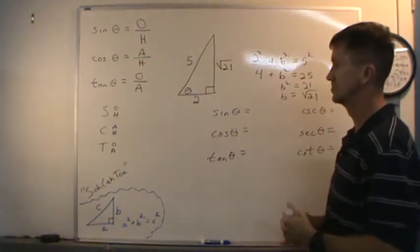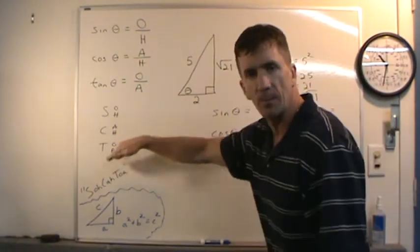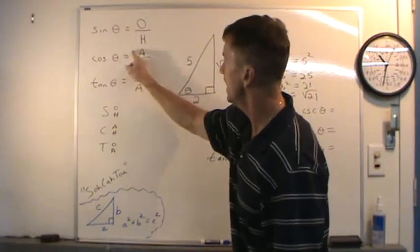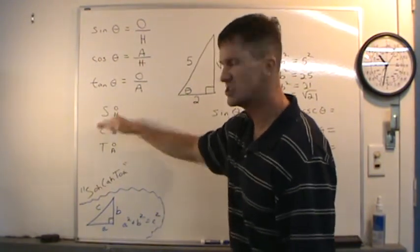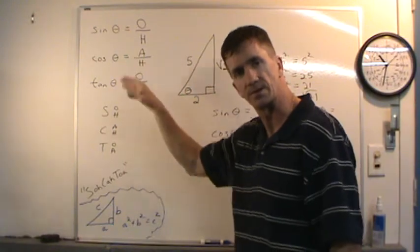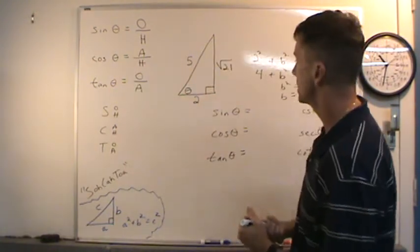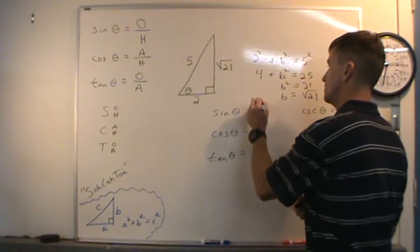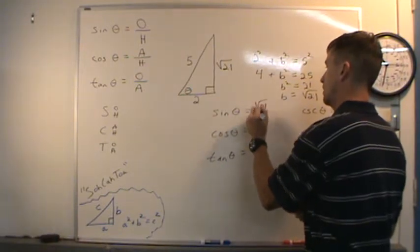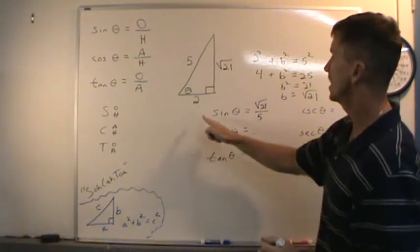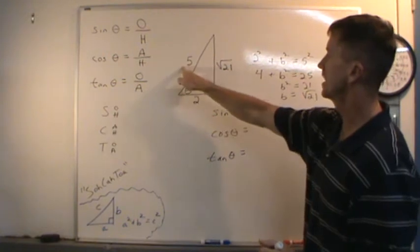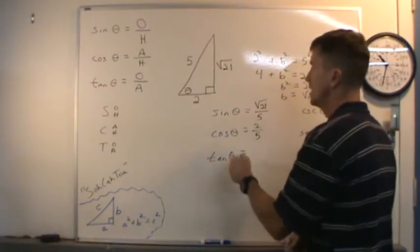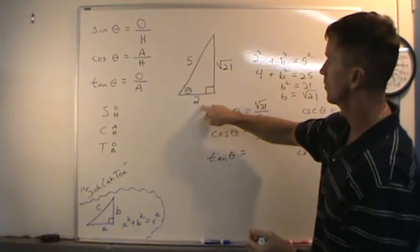Now let's set up all these ratios. A great way to remember this is the phrase SOHCAHTOA — S-O-H-C-A-H-T-O-A. Sine of theta is opposite over hypotenuse: square root of 21 over 5. Cosine theta is adjacent over hypotenuse: 2 over 5. Tangent theta is opposite over adjacent.